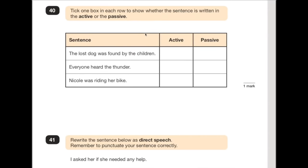Number 40 says: tick one box in each row to show whether the sentence is written in the active or the passive. A good clue is to look for the word 'was', because it crops up a lot in passive ones. 'The lost dog was found by the children' — the dog didn't do anything, the children were the people who did something, so the dog was being passive. 'Everyone heard the thunder' — everybody's doing something, they're listening, so that's active. 'Nicole was riding her bike' — Nicole is the subject and she is actually doing something, so despite the word 'was', it is active.